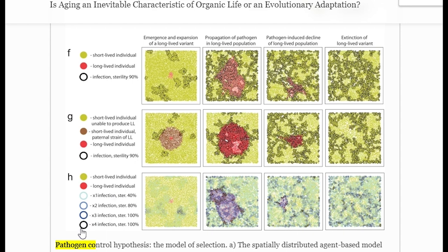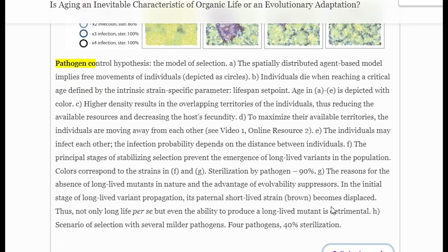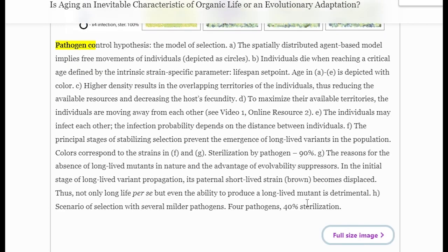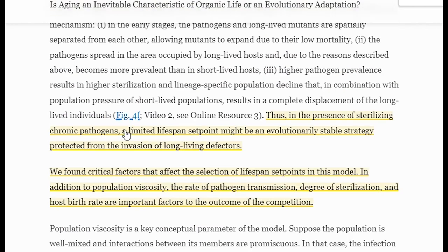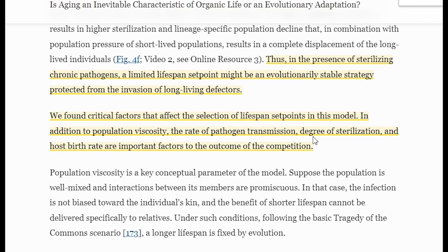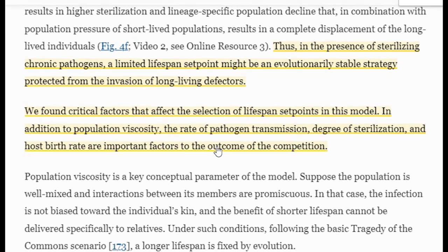Conversely, aging should be slower in species that live in less viscous populations, where kin interactions are perhaps less frequent, and pathogens can spread less easily. So this hypothesis also seems to suggest that aging may be modulated by environmental factors that affect pathogen transmission, such as temperature, humidity, and social behavior.